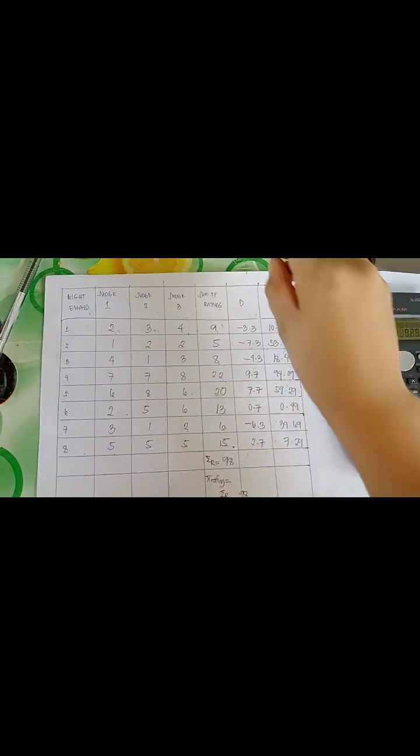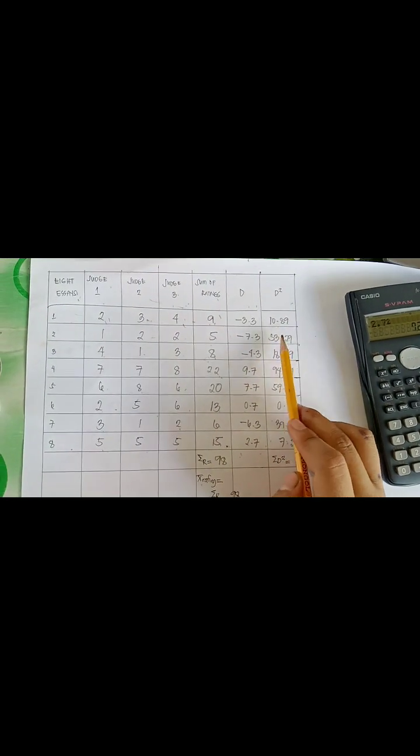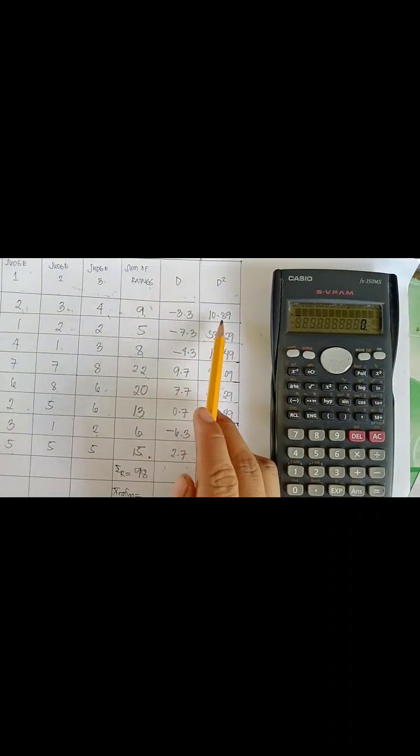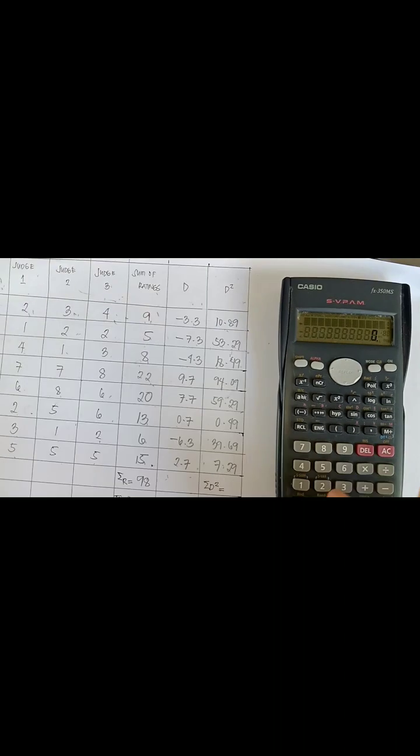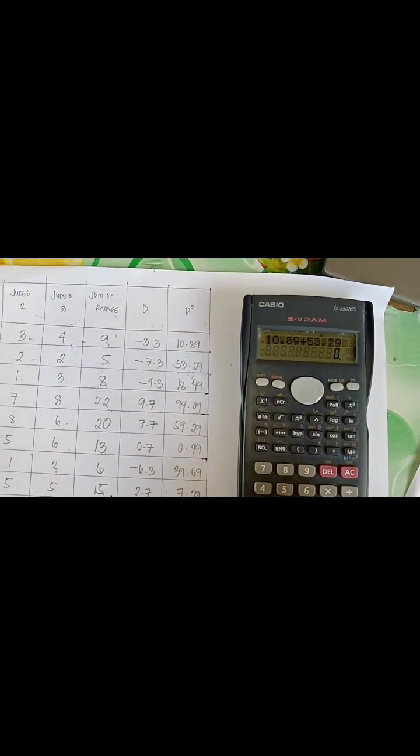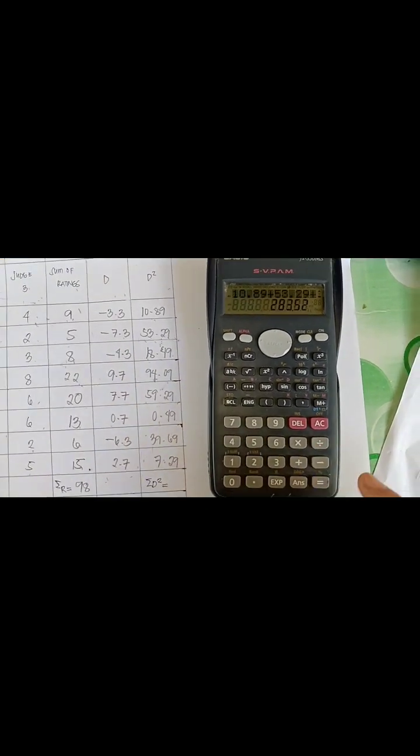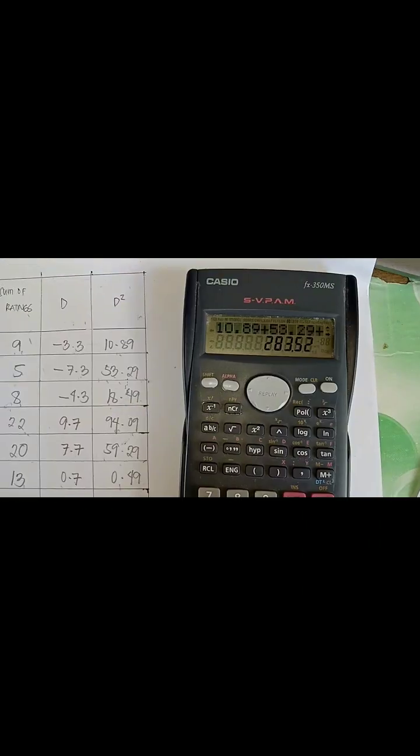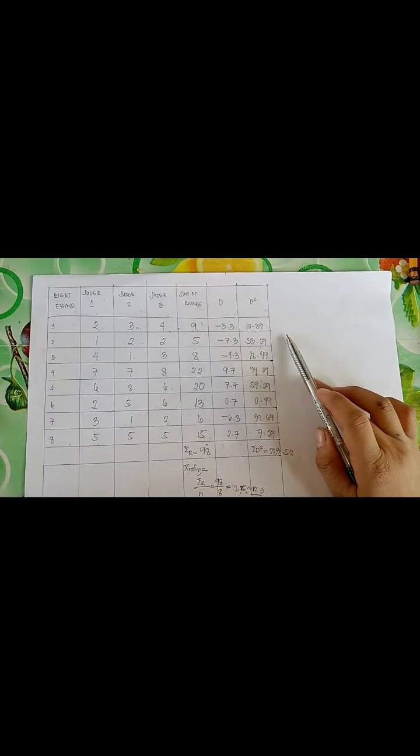And the same mathematical operation we are going for the rest. At this juncture, we have to get the summation of D squared. By simply adding 10.89 plus 53.29 plus 18.49 and the rest. In this case, we have 10.89 plus 53.29 is equal to 253.52. And now the table is complete.